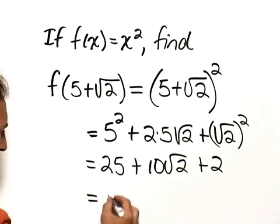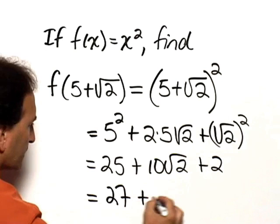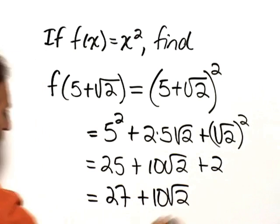And so our final answer would be 27 plus 10 square roots of 2.